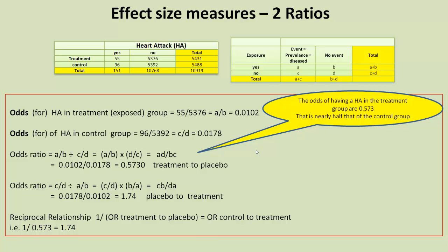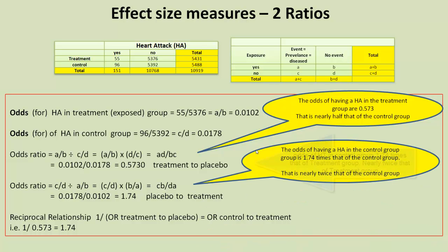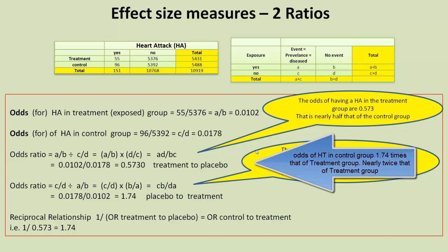First of all, you can say that our 0.573 means that the odds of having a heart attack in a treatment group are 0.573. That is nearly half that of the control group, if you notice, because the control group was 0.174. Similarly, you can say, for the placebo or control group, whichever you want to call it, the odds of having a heart attack in a control group is 1.74 times that of the treatment group.